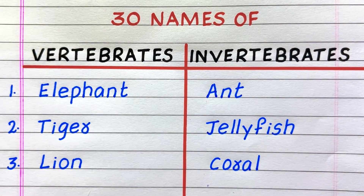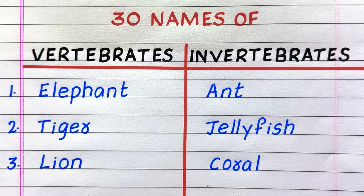First example of a vertebrate animal is elephant, second tiger, third lion.